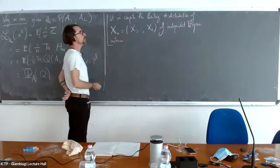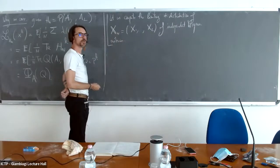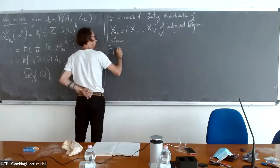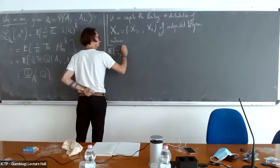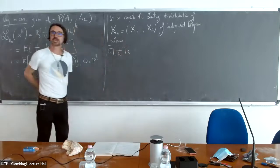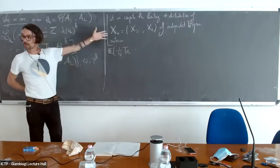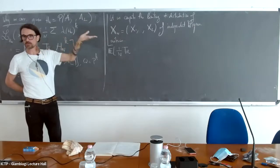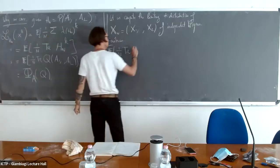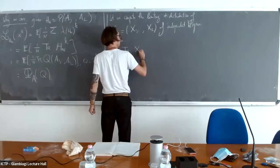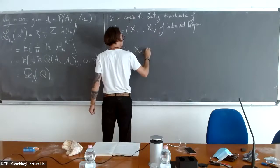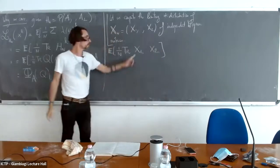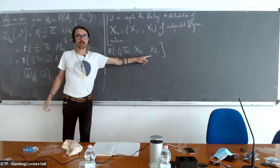By definition, if we want to compute the limiting star-distribution, we must compute the limit as n goes to infinity of the expectation of one over n times the trace of a generic star-product in these matrices. Because these matrices are Hermitian, we don't need to put the adjoint, so we just need to compute the expectation of the product X_{l_1} up to X_{l_n}, for all n and for all indices l_1 through l_n with possible repetition.